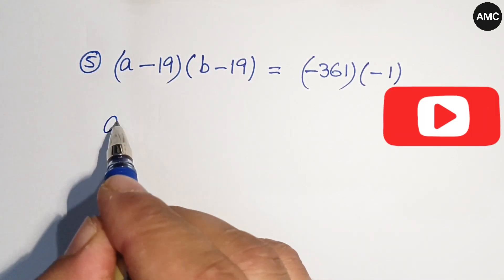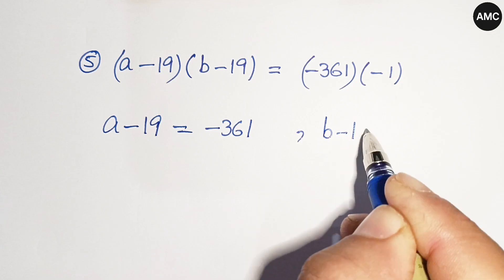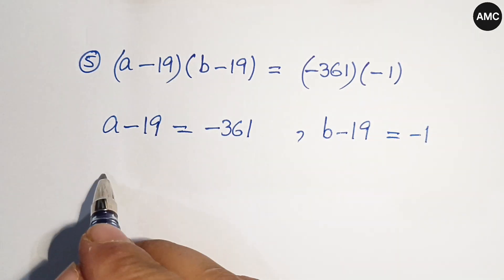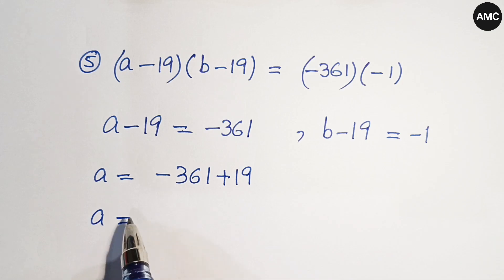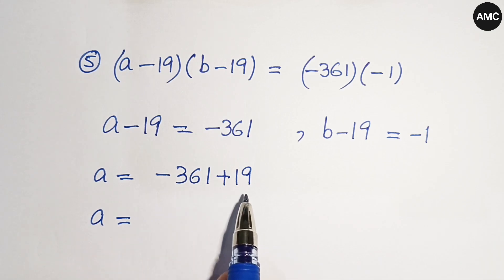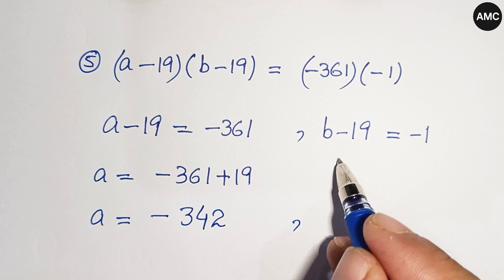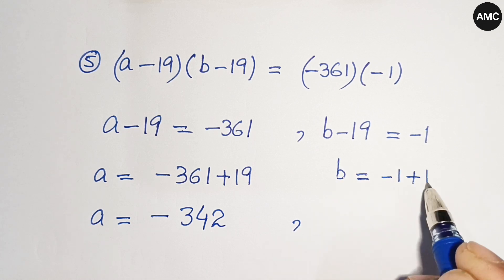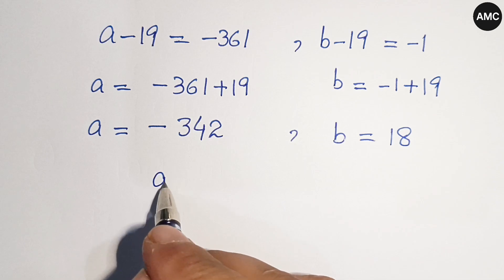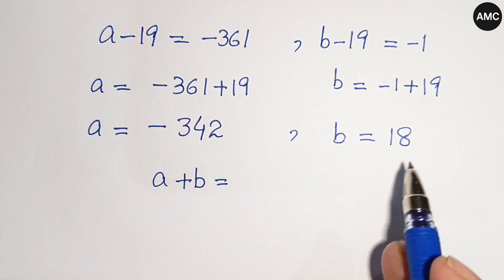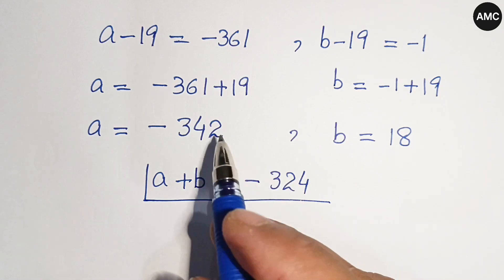Case 5: a minus 19 equals minus 361 and b minus 19 equals minus 1. So a equals minus 361 plus 19 equals minus 342, and b equals minus 1 plus 19 equals 18. Adding these gives a plus b equals minus 342 plus 18 equals minus 324, the same as case 4.